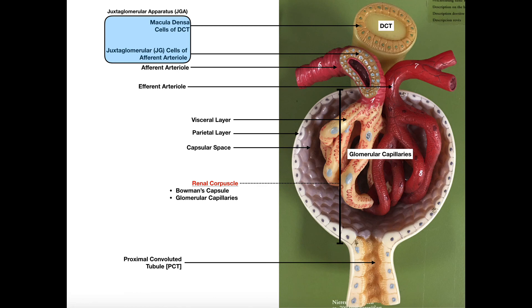Hopefully you understand a little bit about the glomerulus, the renal corpuscle, and filtration. Please make sure to like this video and subscribe to my channel for future videos and notifications. In the next video, we'll pick up with the proximal convoluted tubule. Thank you.